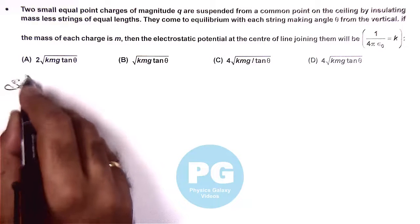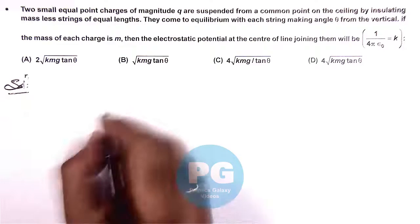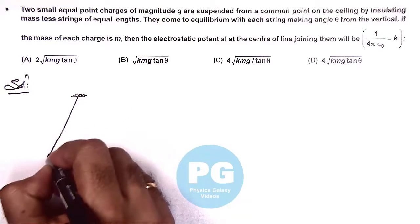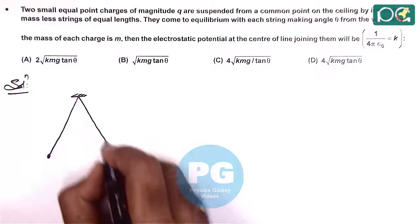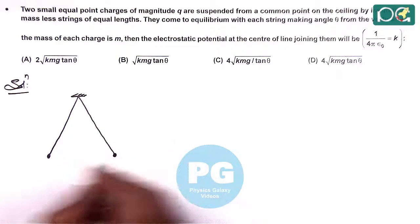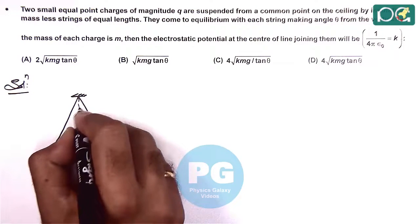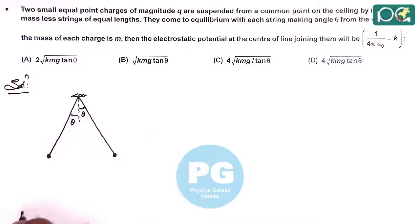To analyze this question, first we visualize it. From a point on the ceiling, two point charges are suspended, and because of their charges they repel each other, making an angle theta with the vertical in equilibrium position.